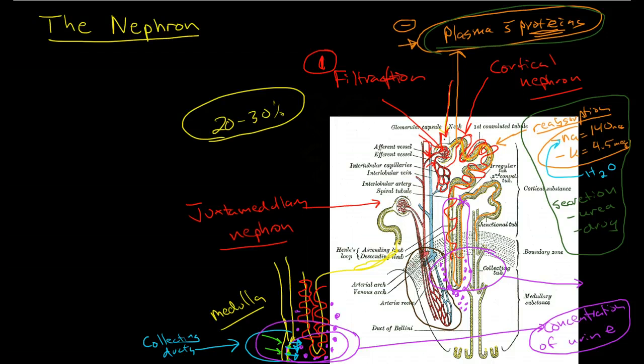Number two, we have reabsorption and secretion in the distal convoluted tubules and the proximal convoluted tubules. And then third, in the collecting ducts and the vasa recta and interstitial fluids around the hairpin turn of the loop of Henle, we have concentration of urine. So that is the function of the nephron in a nutshell.